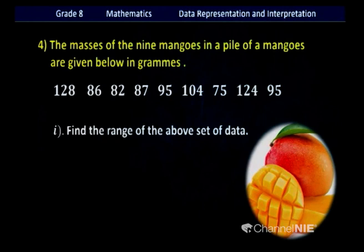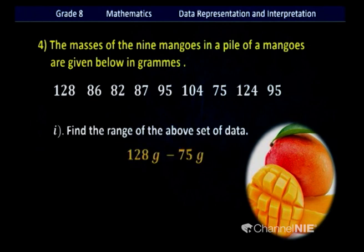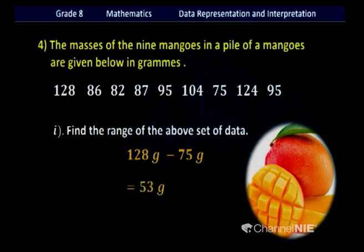First question: find the range of this set of data. They have not asked us to represent it in a stem and leaf diagram — just using the raw data, find the range. We need the greatest value and the least value. The least value is 75 grams and the greatest value is 128 grams. To find the range, subtract 75 from 128: the answer is 53 grams.